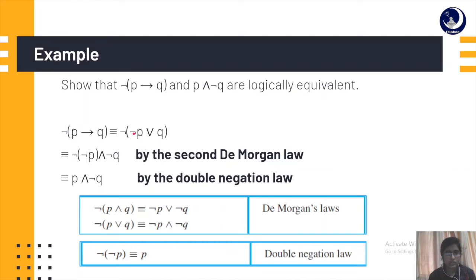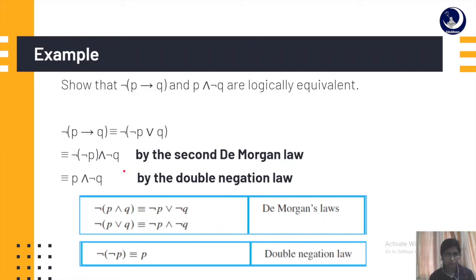By applying the laws, see how simple it becomes. The negation of 'if p then q' is equivalent to the negation of 'not p or q'. When there is a whole negation applied to an 'or' expression, we use De Morgan's law. By the second De Morgan's law, this becomes 'not of not p' and 'not q'. Since it was an 'or', it becomes an 'and'.